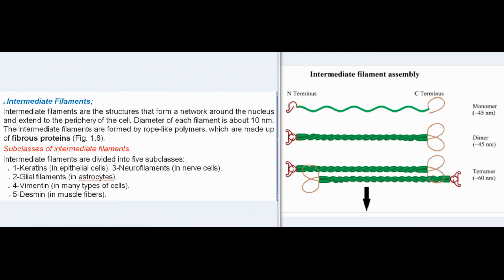Intermediate filaments are structures that form a network around the nucleus and extend to the periphery of the cell, with each filament having a diameter of about 10 nm. They are formed by rope-like polymers made up of fibrous proteins. Intermediate filaments are divided into 5 subclasses: keratins in epithelial cells; neurofilaments in nerve cells; glial filaments in astrocytes; vimentin in many types of cells; and desmin in muscle fibers. They help maintain the shape of the cell and connect adjacent cells through desmosomes.